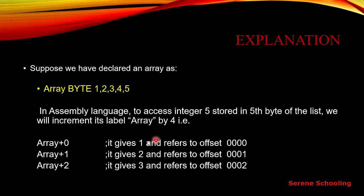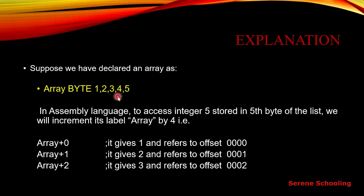The first number is located at one address, and the second number is at the very next consecutive address. This is the way we access these elements. If we want to print our elements, we can use the call write int instruction. This is how we can access and declare our array.